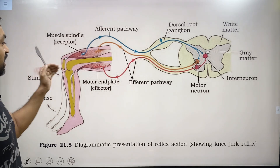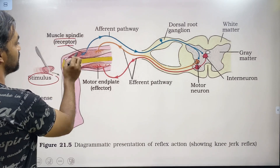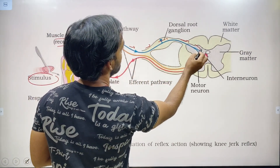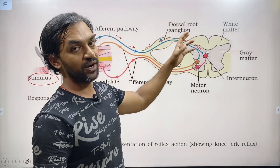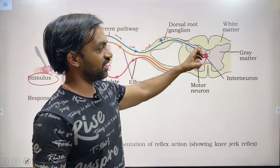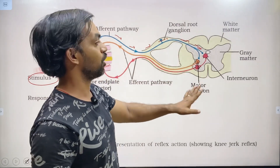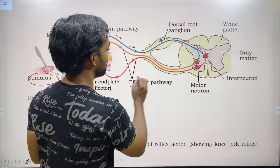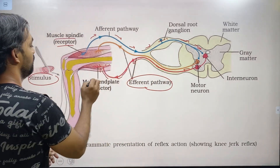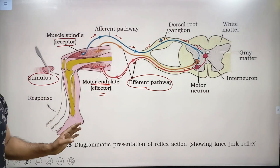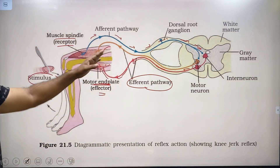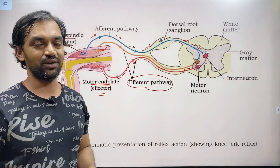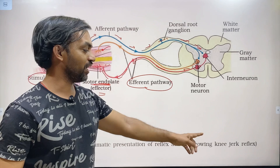There is a muscle stimulus. The muscle spindle receptor receives it along the afferent path, and the nerve impulse is carried to the spinal cord. In the spinal cord — which has an inner gray matter and outer white matter — there is an interneuron, then a motor neuron along the efferent pathway, leading to the motor end plate and effector region, producing the response. This is the reflex arc. The diagrammatic presentation of reflex action shows the knee jerk reflex.